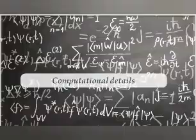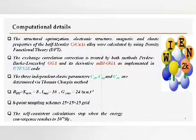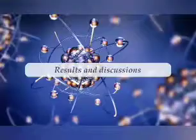Going now to the computational details. The structural optimization, electronic, magnetic, and elastic properties of the half-Heusler CrCAIS alloy were calculated by using density functional theory. The exchange correlation correction is treated by both methods, GGA and MBJ-GGA, as implemented in the Wien2k code. The strain-dependent elastic constants Cij are determined by Thomas Charpin's method. The values of k-points, RMT, lmax, and Gmax are mentioned. The self-consistent calculations stop when the energy convergence reaches 10^-5 Rydberg.